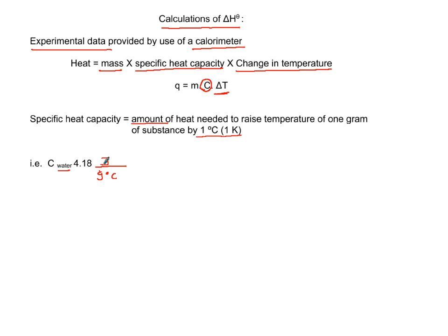The denominator is per gram per Celsius. You need 4.18 joules to raise the temperature of one gram of water by one degree Celsius. This quantity could be expressed as the same number, except you could have joules per gram per Kelvin.